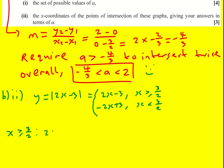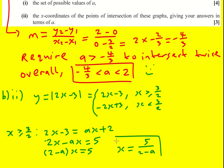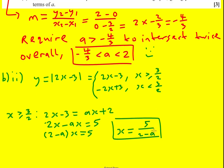Let's look for the solution when x is greater than or equal to 3 over 2. I'm going to get 2x minus 3 equals ax plus 2. We're trying to solve this in terms of a, so I can rearrange it: 2x minus ax equals 5. Factorize out that x, so 2 minus a times x equals 5, and therefore x is 5 over 2 minus a.